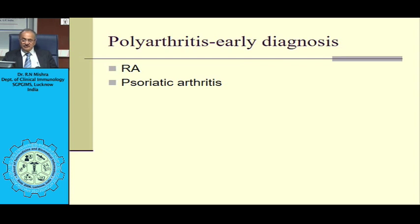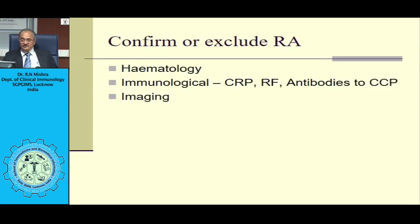In early stage rheumatoid arthritis, hematological investigation may show low hemoglobin and raised platelet count due to the acute phase response. CRP confirms the inflammatory nature. Rheumatoid factor and antibodies to CCP are present in about 70 to 80 percent of cases of rheumatoid arthritis. In early stages, X-ray doesn't tell much; one has to use ultrasound and MRI to appreciate bone edema and erosion. After about one year of disease, typical changes of rheumatoid arthritis can be seen on X-ray of the hands.